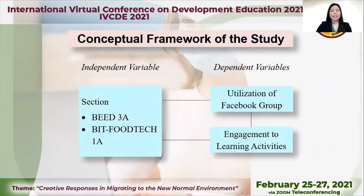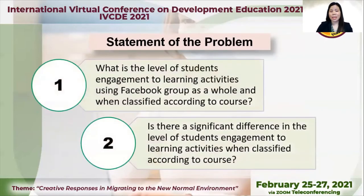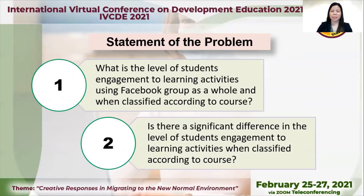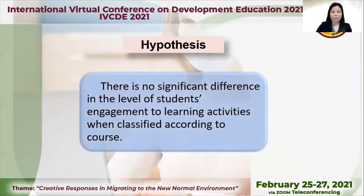For our conceptual framework, the independent variable is the section, and the dependent variables are the utilization of Facebook group and engagement to learning activities. Sections are composed of the Bachelor of Elementary Education 3A and the Bachelor of Industrial Technology Food Tech 1A. This study answers the following problems: first, what is the level of students' engagement to learning activity when classified according to course? Is there a significant difference in the level of students' engagement to learning activities when classified according to the course? Our hypothesis is there is no significant difference in the level of students' engagement to learning activities when classified according to course.